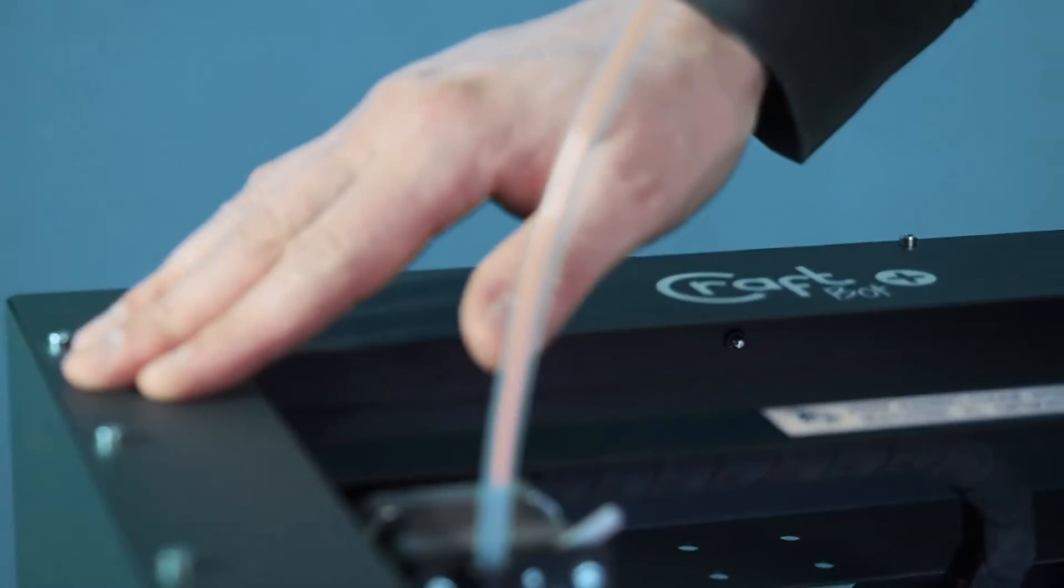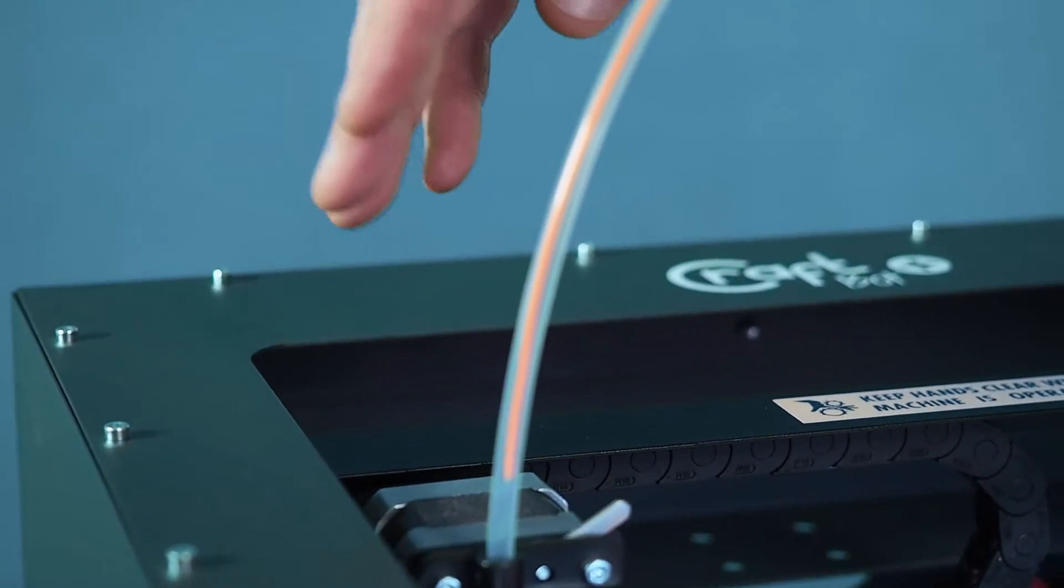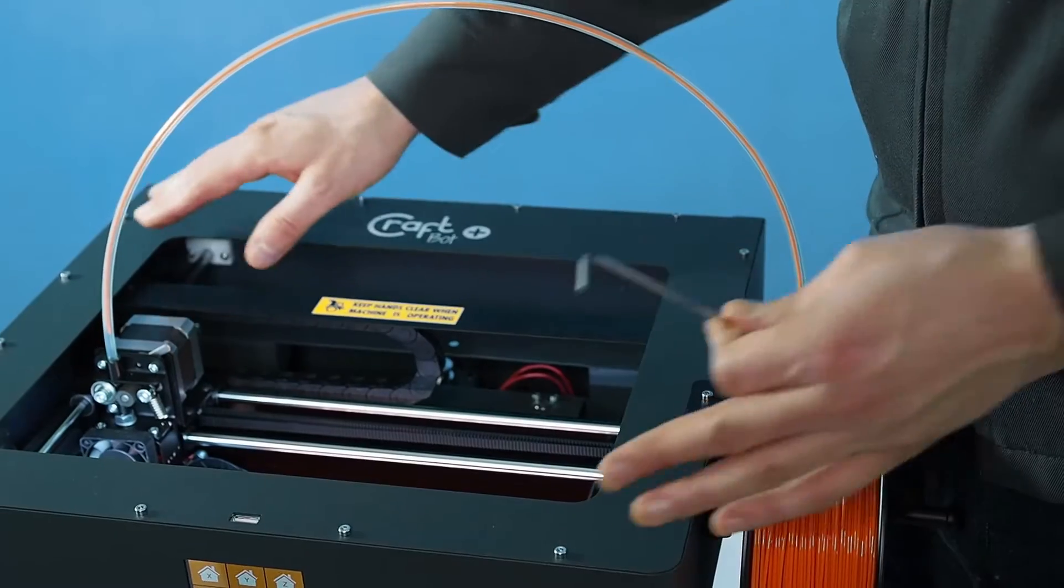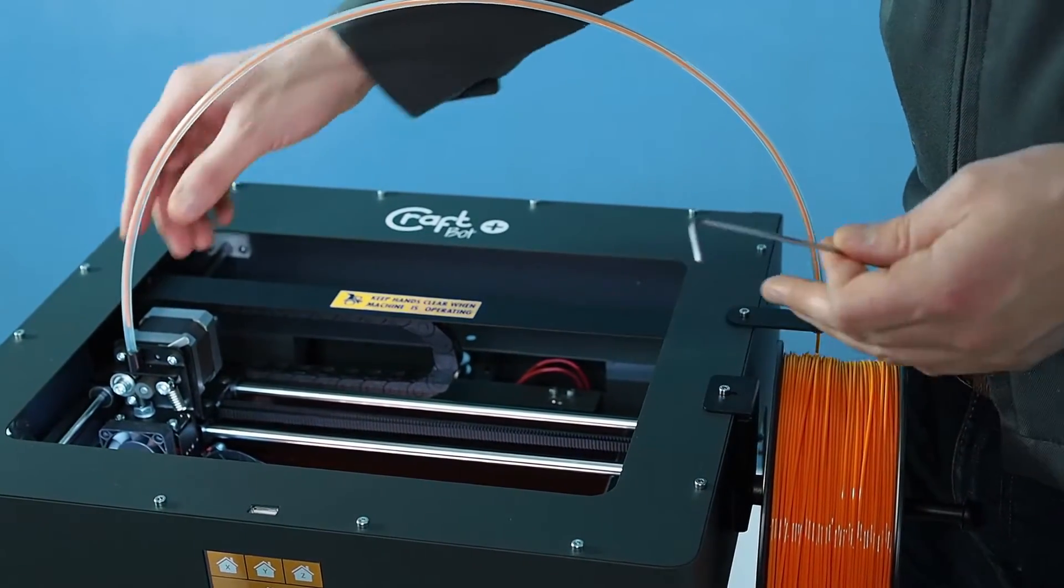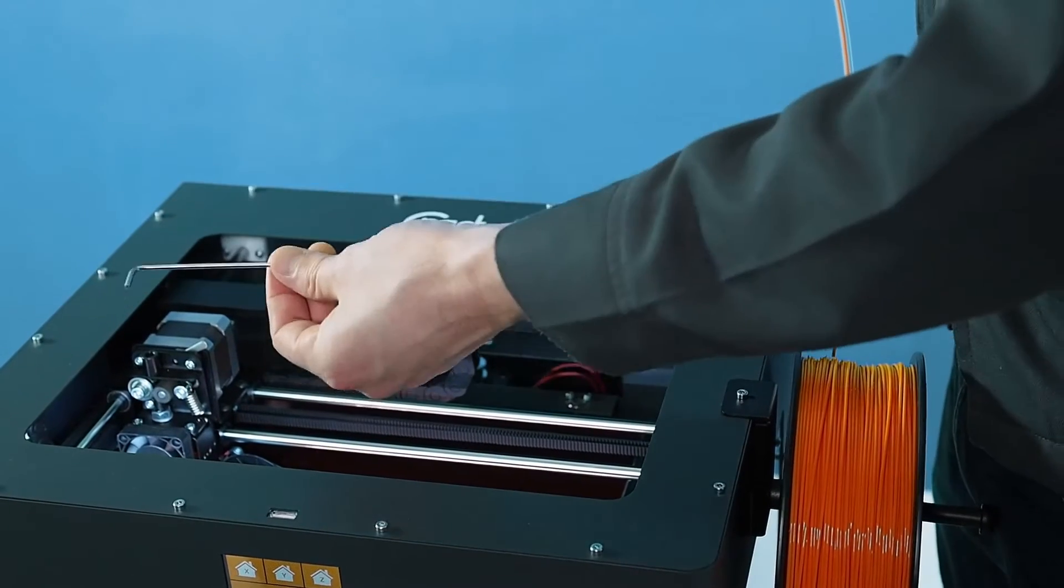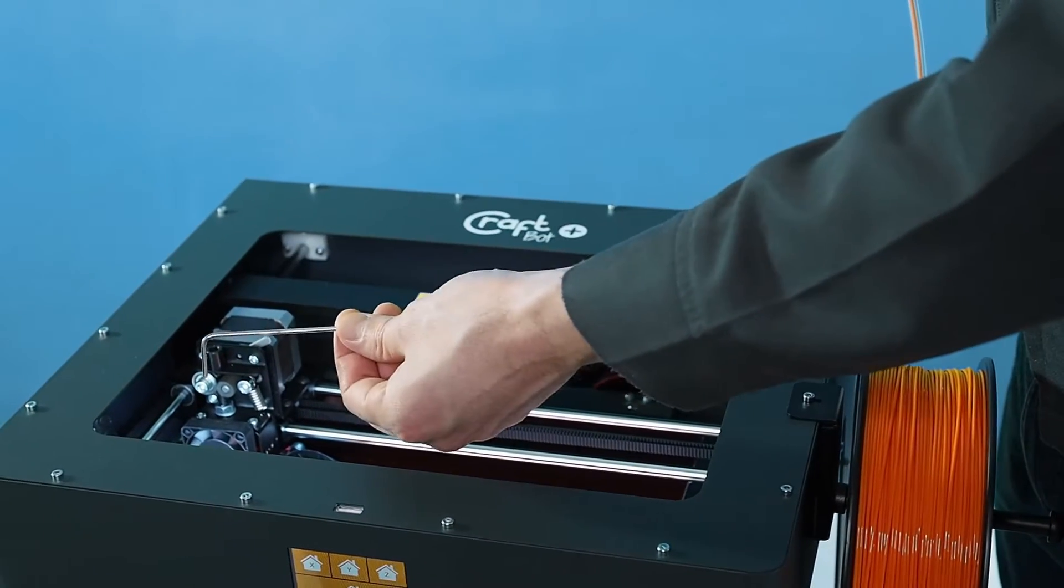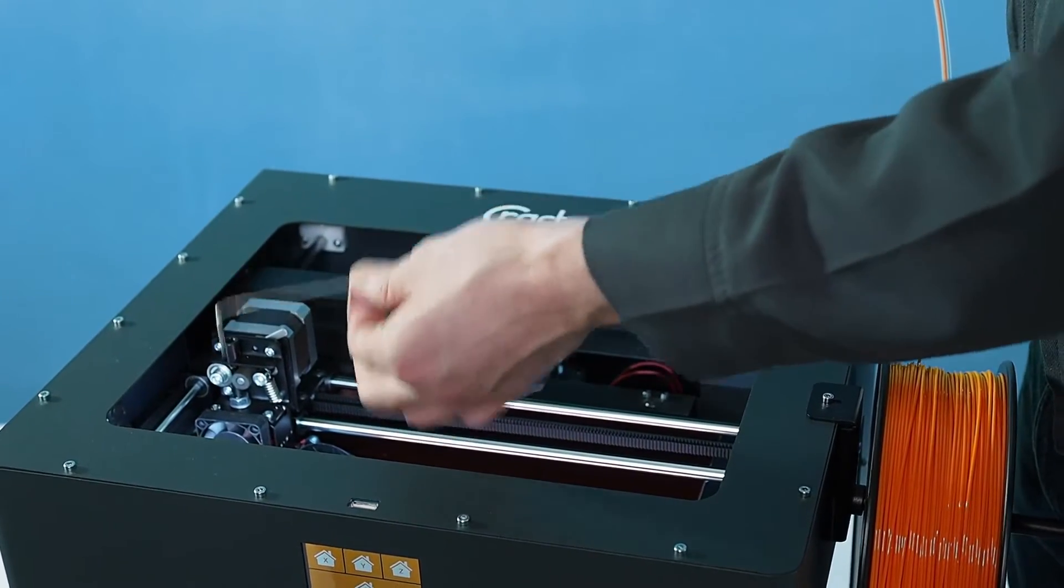To clean the extruder, you don't necessarily have to take the top plate off. You can get at it without doing that. But I'm just going to take it off so that we can see the inside of the machine better. I'm going to use the trusty Allen wrench that came with the Allen wrench set with the CraftBot kit.